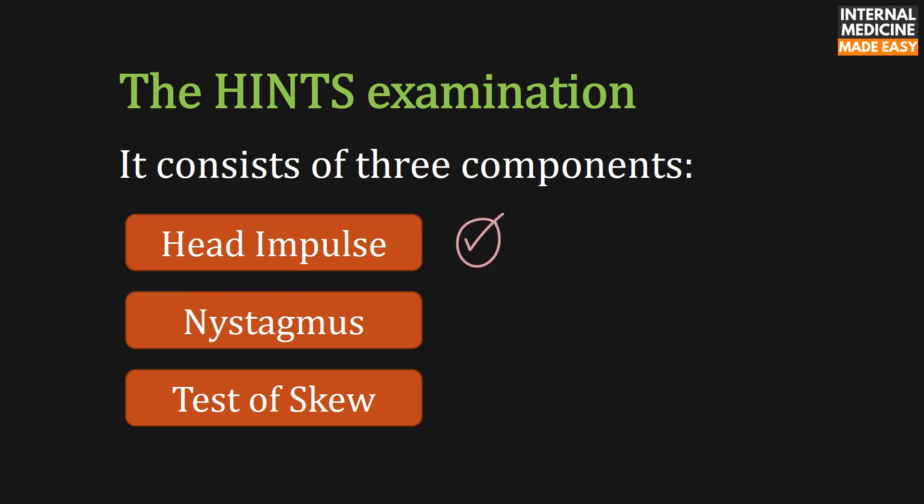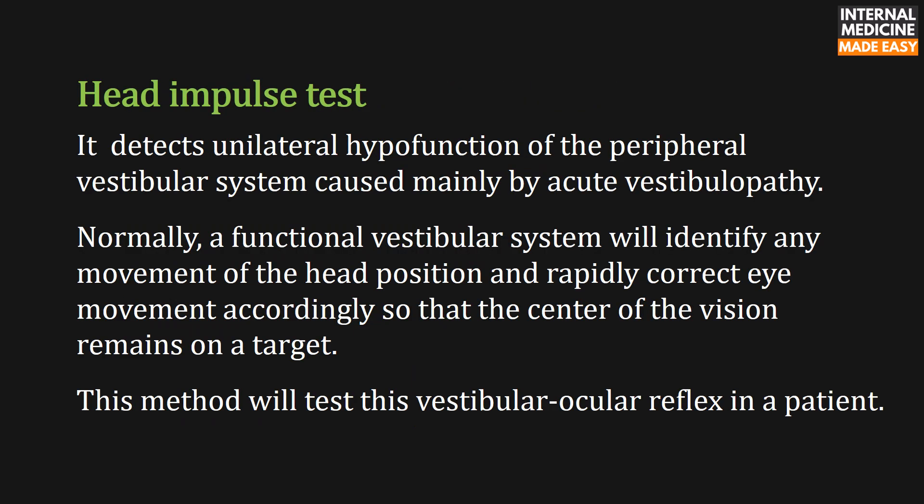The head impulse test detects unilateral hypofunction of the peripheral vestibular system caused mainly by acute vestibulopathy. Normally, a functional vestibular system will identify any movement of the head position and rapidly correct eye movement accordingly so that the center of vision remains on a target. This method tests the vestibulo-ocular reflex in a patient.